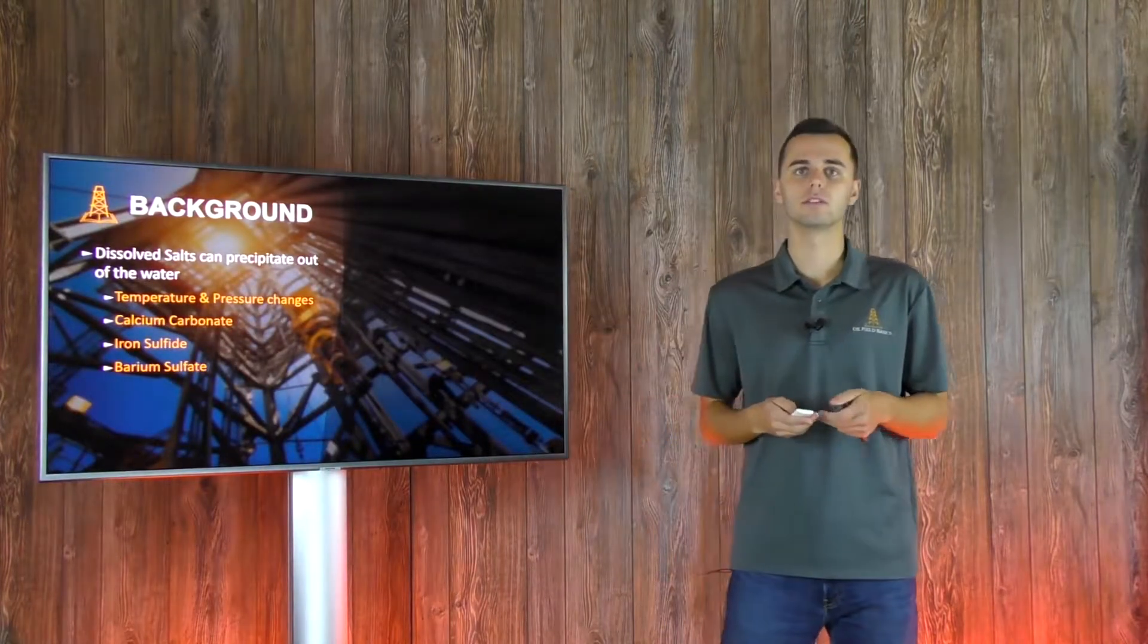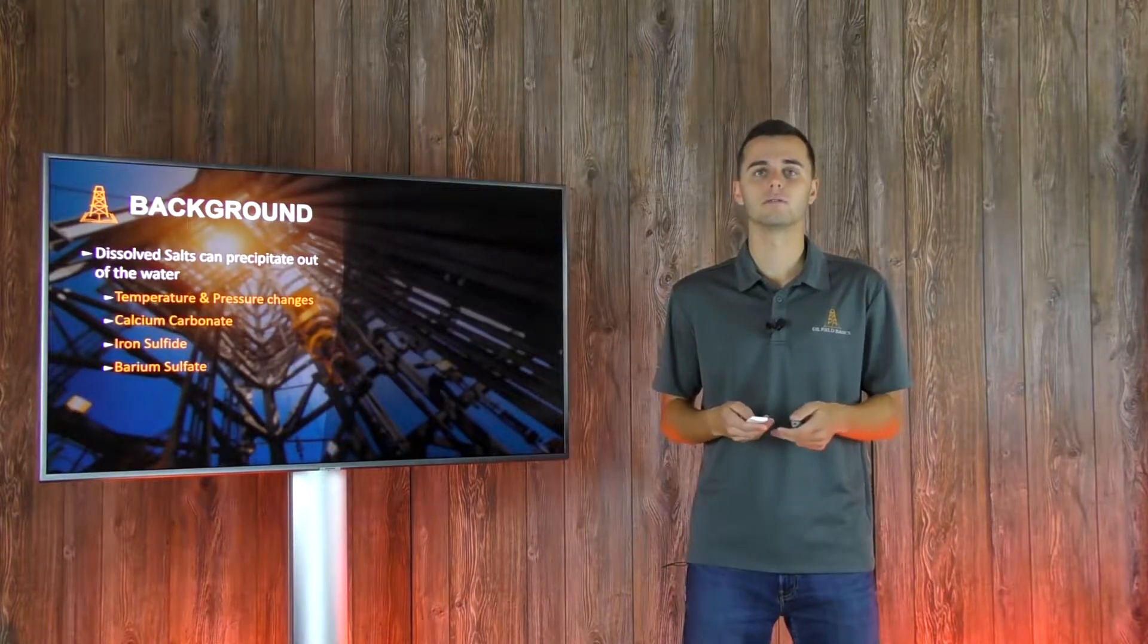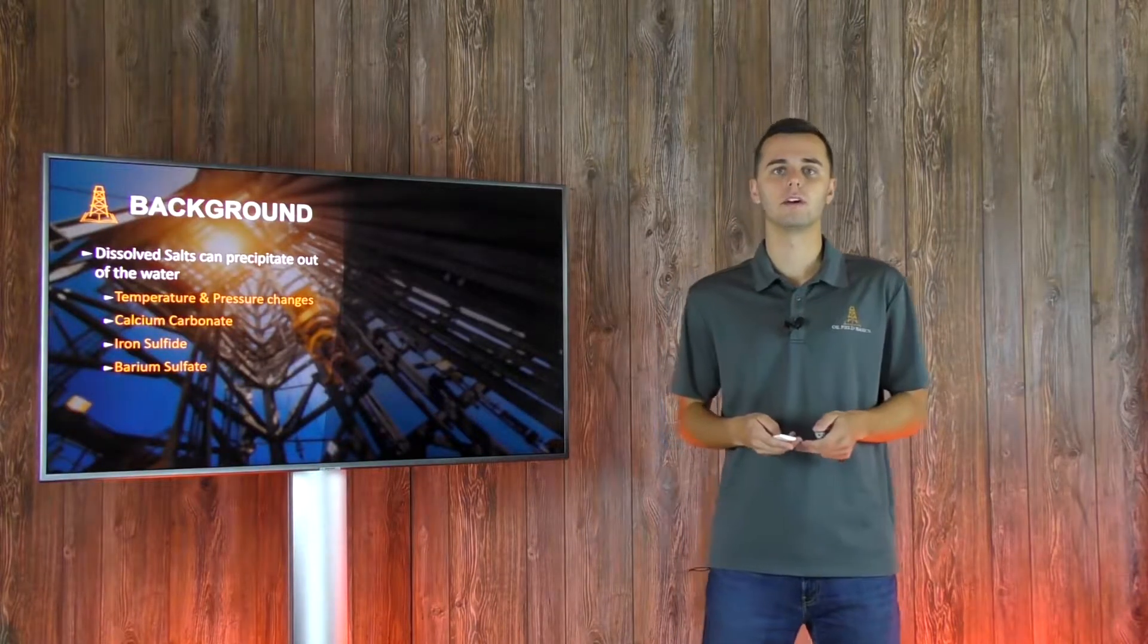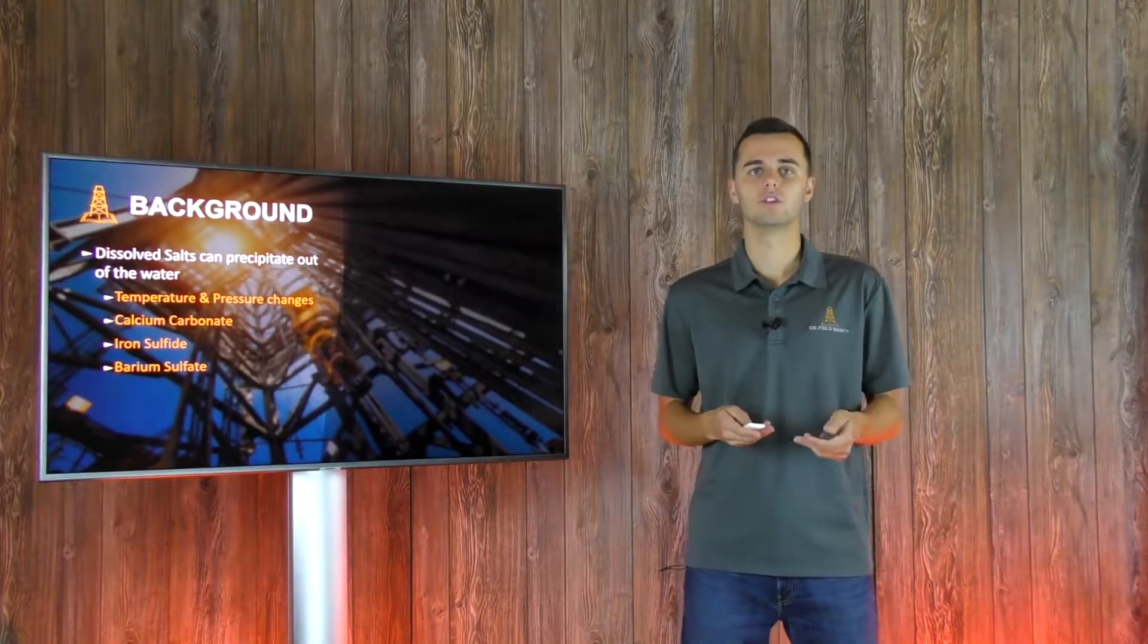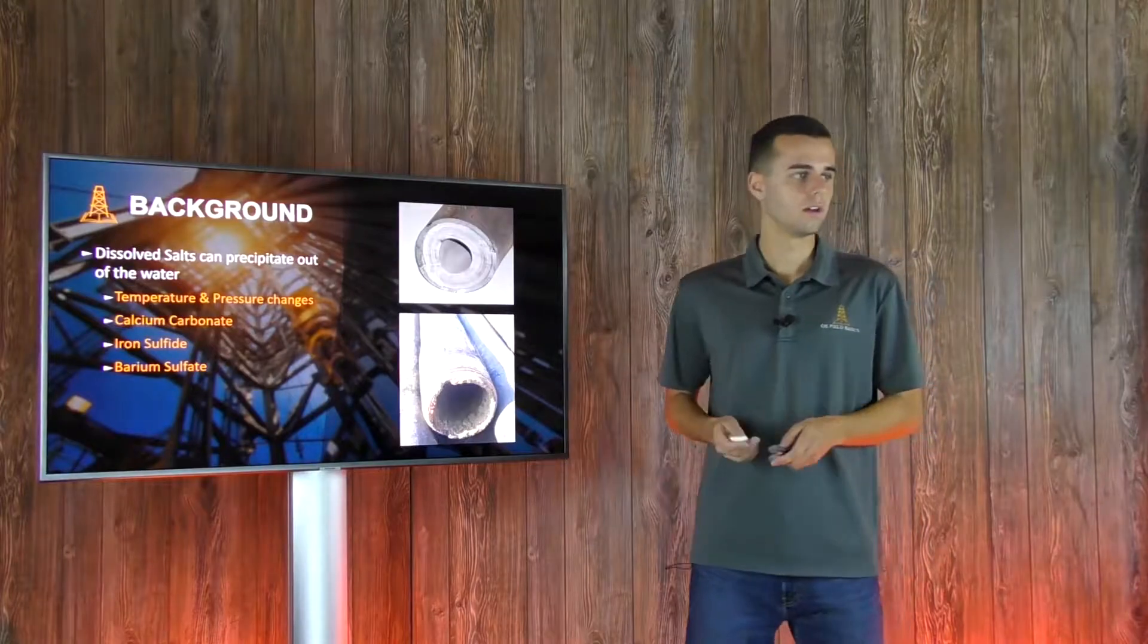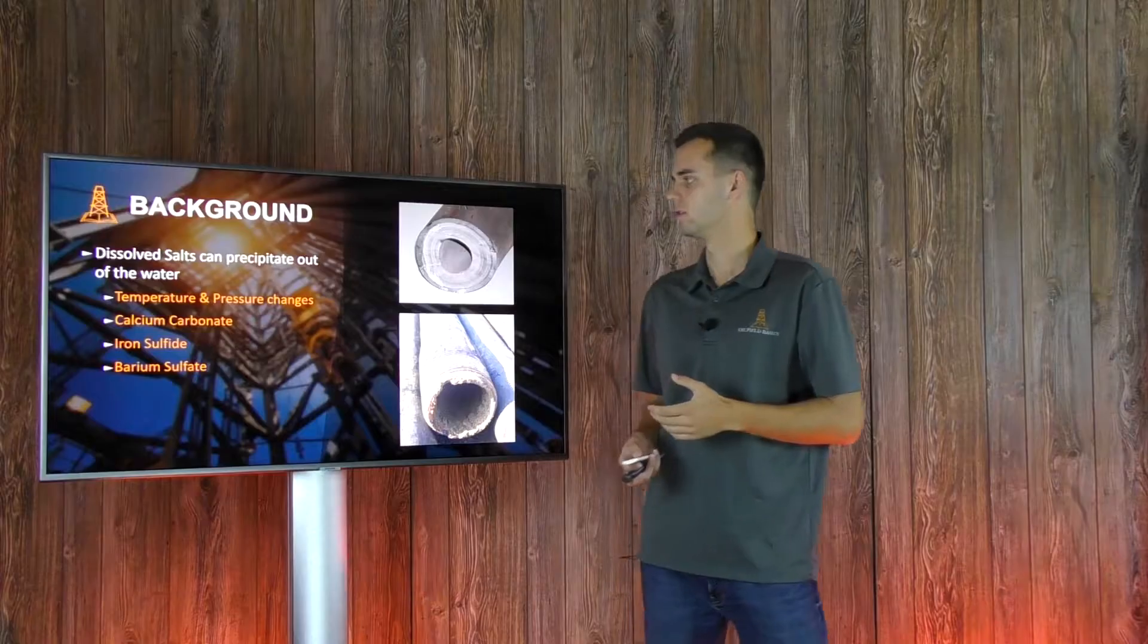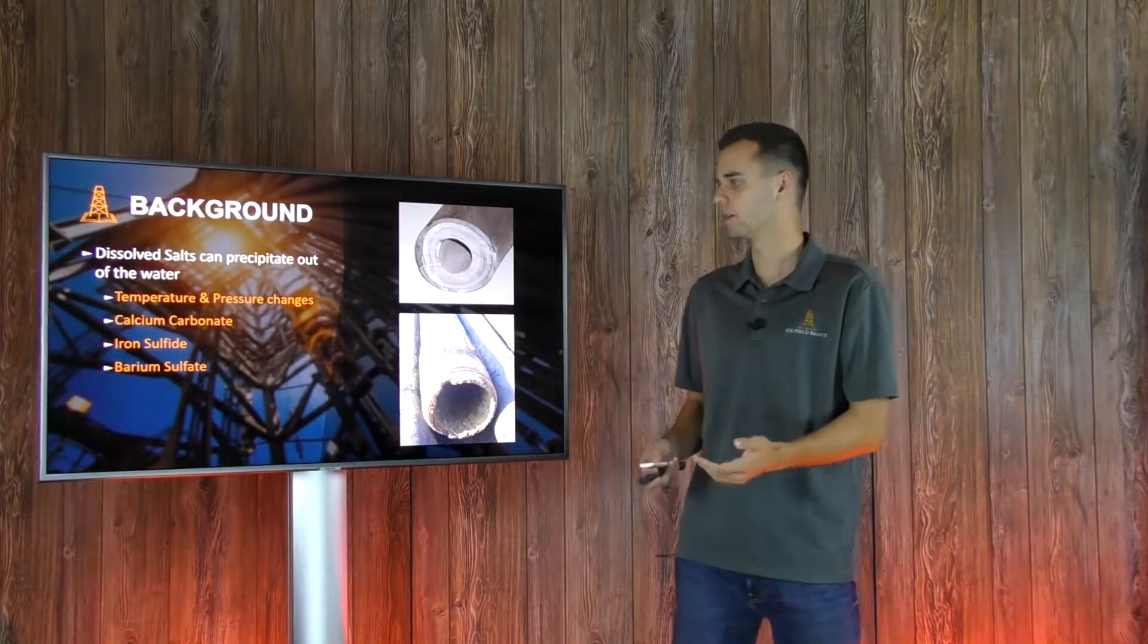Some common types of scale you could find in the oil field are calcium carbonate, iron sulfide, and barium sulfate. Each type of scale has different characteristics, such as hardness, composition, and color. As you can see from these two images, the top one is a picture of a cutaway of tubing, and you can see it's a whiter color scale, which is indicative of a calcium carbonate scale.